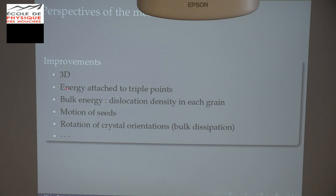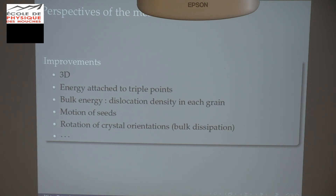I could also add energy attached to the triple points, which is completely neglected here. Of course, I need to introduce some bulk energy such as dislocation density in each grain, also completely neglected here. We can also update the position of the seeds, rather than just the weights, to deform the grains more. I also neglected the rotation of crystal orientation — for very small grains, it may be more efficient to rotate the grain instead of growing, which requires calculating the activated slip systems for the crystallographic turn, and this can be introduced as a dissipation mechanism.